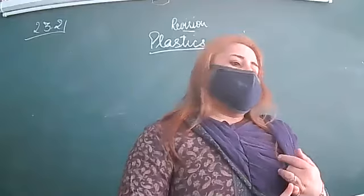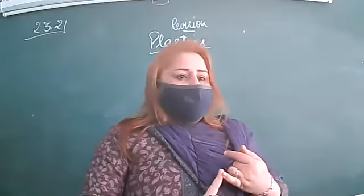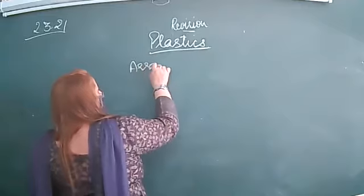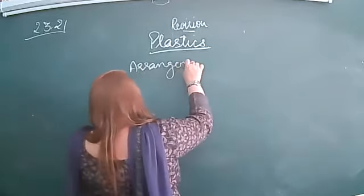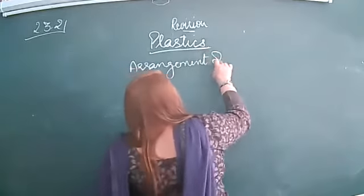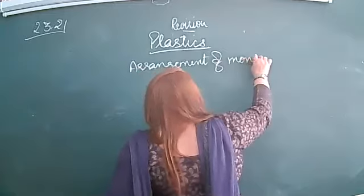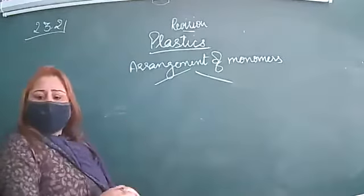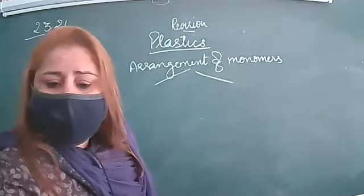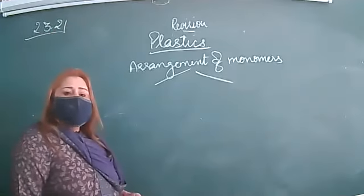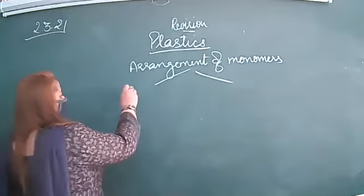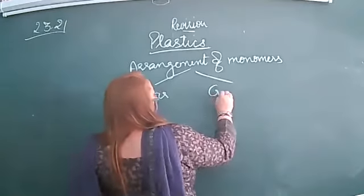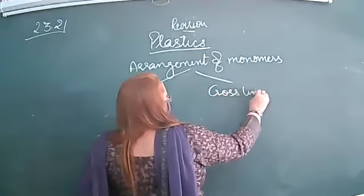Plastic is also a synthetic fiber. It is also prepared from the small units and arrangement of monomers. According to the arrangement of monomers, it is divided into two types: one is the linear plastic and the second one is the cross-linked plastic.